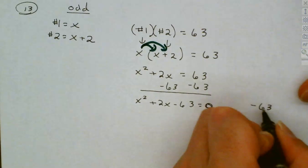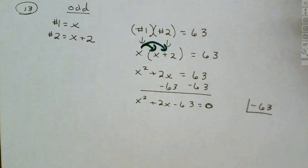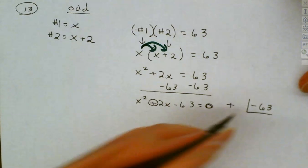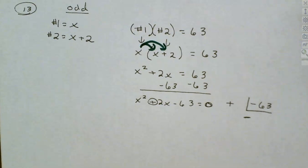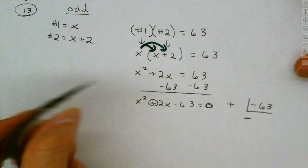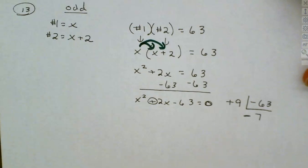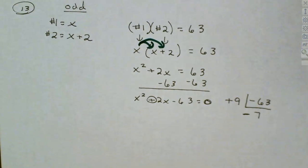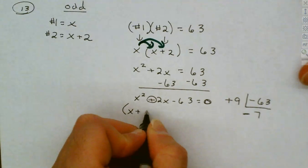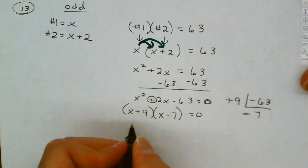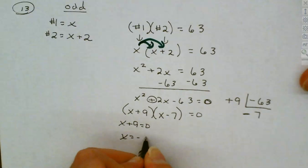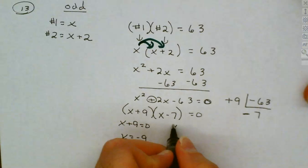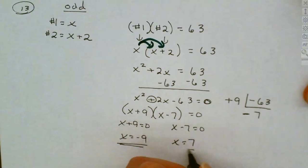First times the last is minus 63. The signs are different — the larger one is positive, smaller one is negative. What two numbers multiply to give you 63 and subtract to give you 2? You want 9 and 7 — positive 9, negative 7. We don't have to do factor by grouping; we can jump directly to our factors: x plus 9 times x minus 7 equals 0. So x plus 9 equals 0 gives x equals negative 9, and x minus 7 equals 0 gives x equals positive 7.